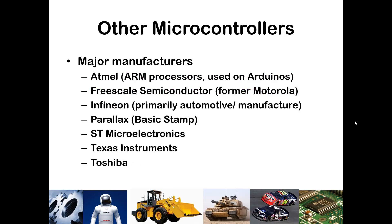In terms of other companies that are competitors, Atmel makes ARM processors, perhaps most famous for being used on Arduinos. Freescale Semiconductor emerged out of Motorola. Infineon does a lot for automotive and manufacturing devices. Parallax provides the Basic Stamp used on Bobot kits, which you may be familiar with from a previous course. ST Electronics, Texas Instruments, and Toshiba all make very good microcontrollers. Their architecture will be a little different, so there's a learning curve, but TI especially has some very easy-to-use, quick-to-learn programs.